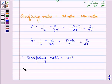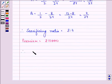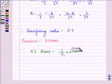Now we are given the amount of premium as 2.10 lakh that is 2,10,000. So, we have A's share in it as 3/7 into 2,10,000 that is equal to 3 into 30,000.